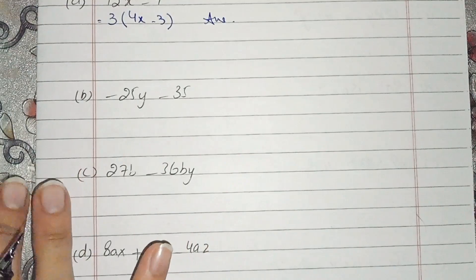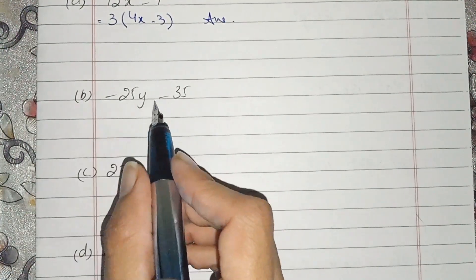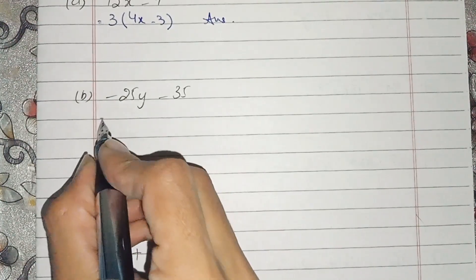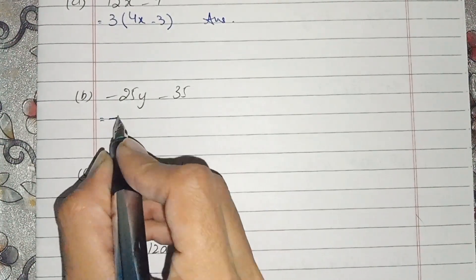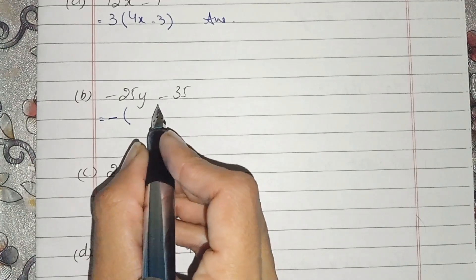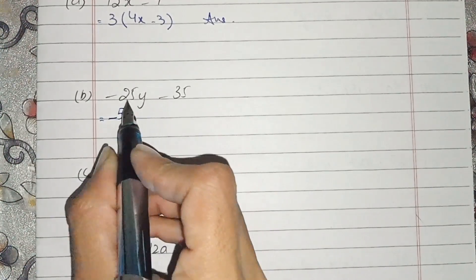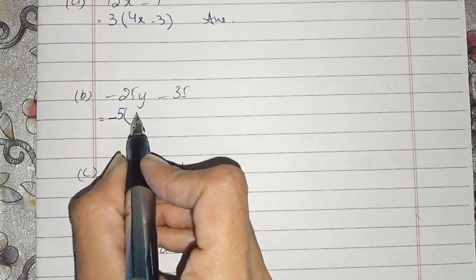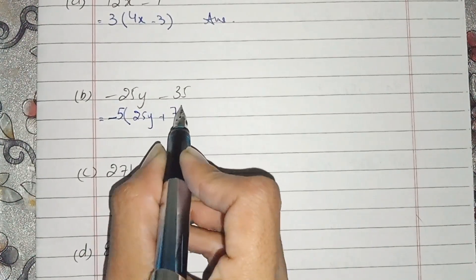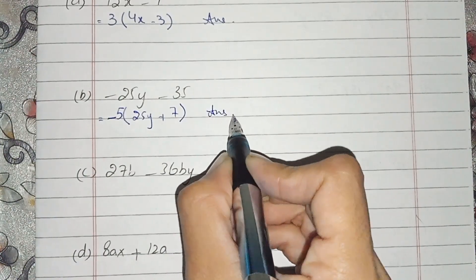Same in part b. We observe what is common — the sign is also common. Both have a minus sign, we can take it out. After that, 5 is common in it. And what is left is 25by plus 7. This is the answer of b part.